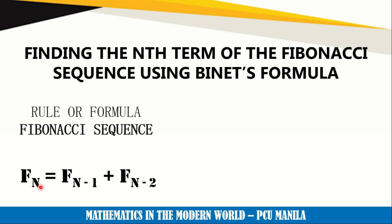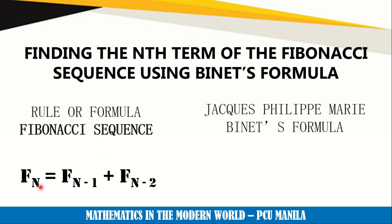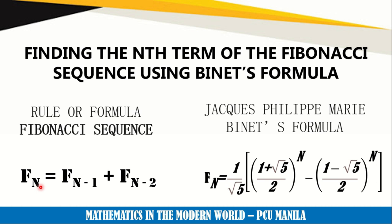Right now we will be introducing another formula which was discovered by Jacques Philippe Marie Binet. This formula goes like this: F sub n equals 1 over square root of 5 times the quantity of 1 plus square root of 5 over 2 raised to n, minus the quantity of 1 minus square root of 5 over 2 raised to n.